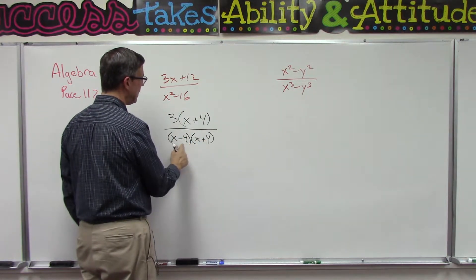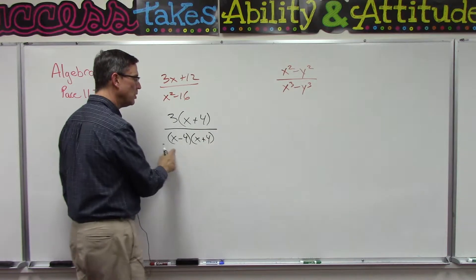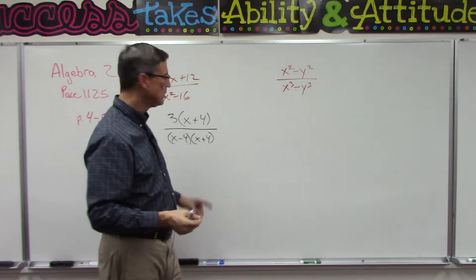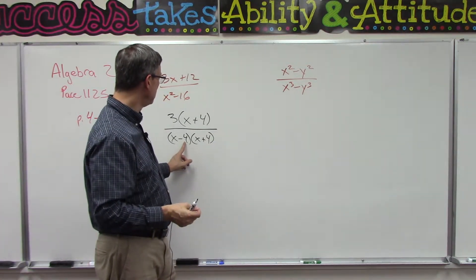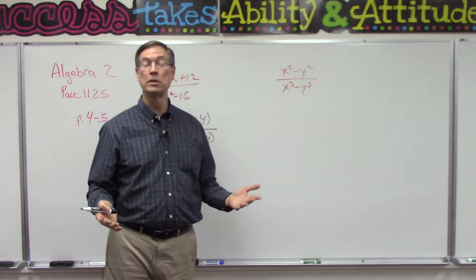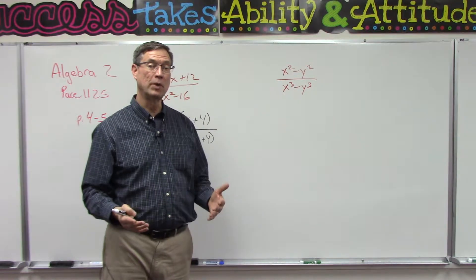And remember you can always check it by doing the FOIL method: first, outer, inner, last. And when we do that, these two middle terms are going to cancel each other out—positive 4x, negative 4x.